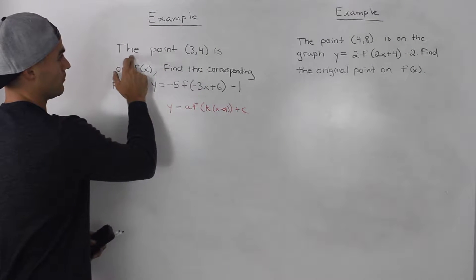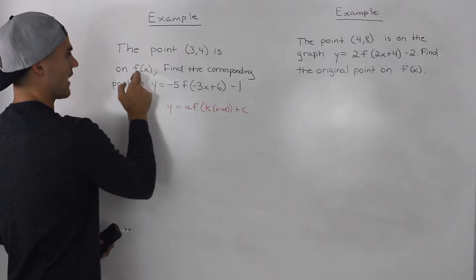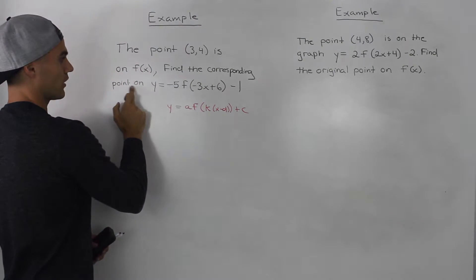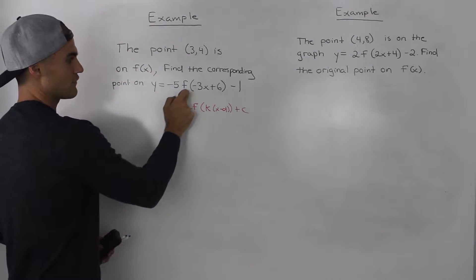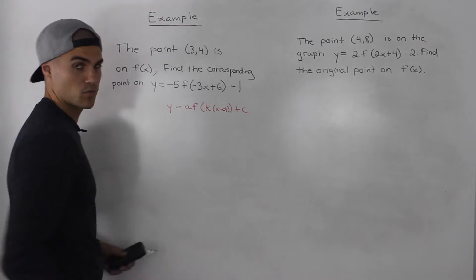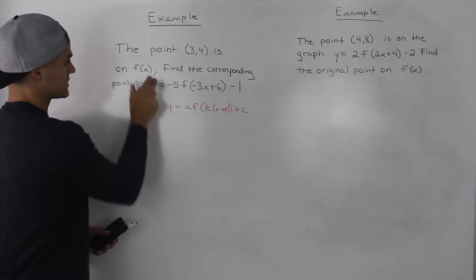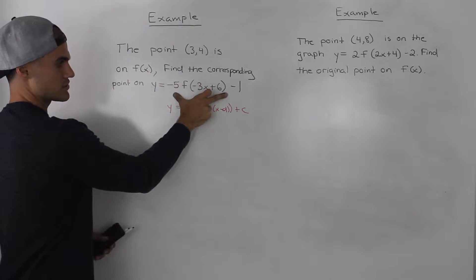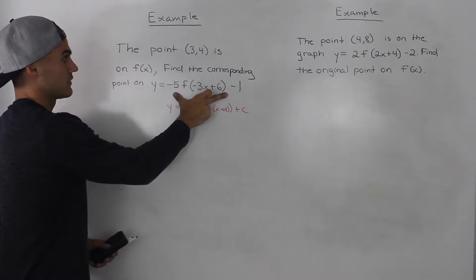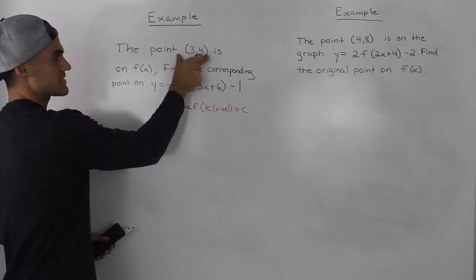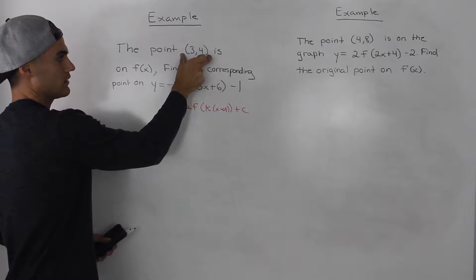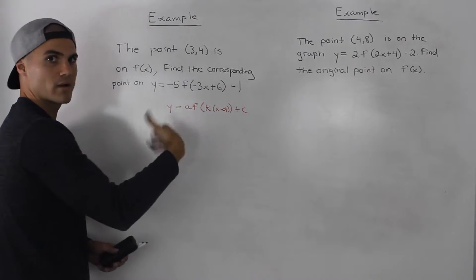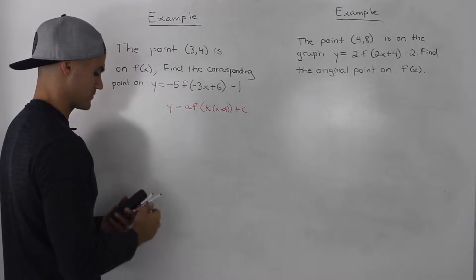So the first example: the point (3, 4) is on f(x). Find the corresponding point on y equals negative 5f of negative 3x plus 6, minus 1. So basically we're taking this f(x) and transforming it into this new function, and this point is going to be mapped to the new function. They want to know what that new point is.